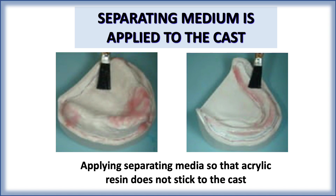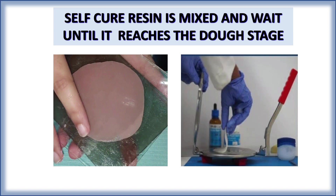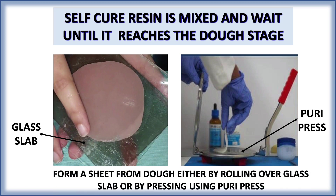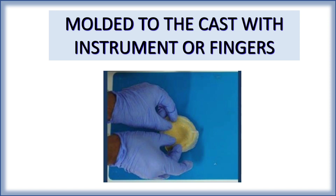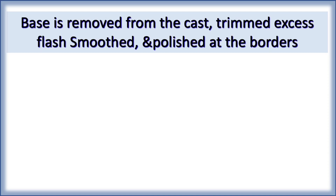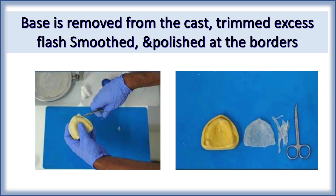Once the resin reaches the dough stage, form a sheet either by rolling over a glass slab or pressing using a press. After forming a sheet, mold it to the cast with an instrument or finger pressure so it closely adapts to the cast. Then remove the excess, and smooth and polish the border with an acrylic bur, trimming the excess and finishing with buff and pumice. At the moldable stage it can also be cut with scissors or a knife.